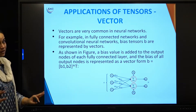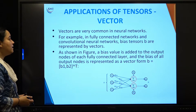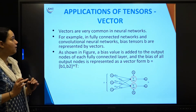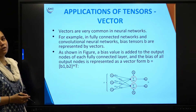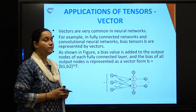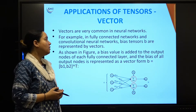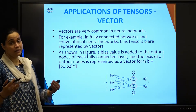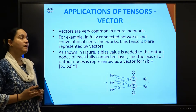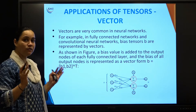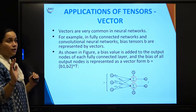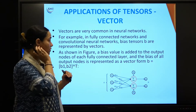Coming to the applications of tensors as a vector: vectors are very common in neural networks. For example, in a fully connected network or in a larger network like a convolutional neural network where images are the input, input data can be expressed as vectors. Every input has a weight that is expressed as a vector, and biases throughout the network are expressed as a vector. In CNNs specifically, the biases are vectors.